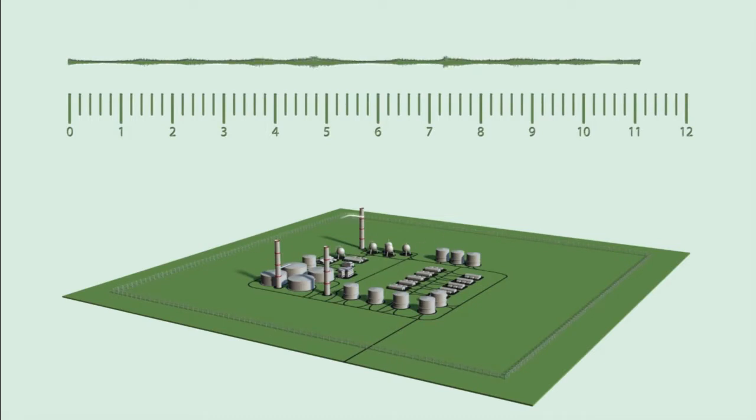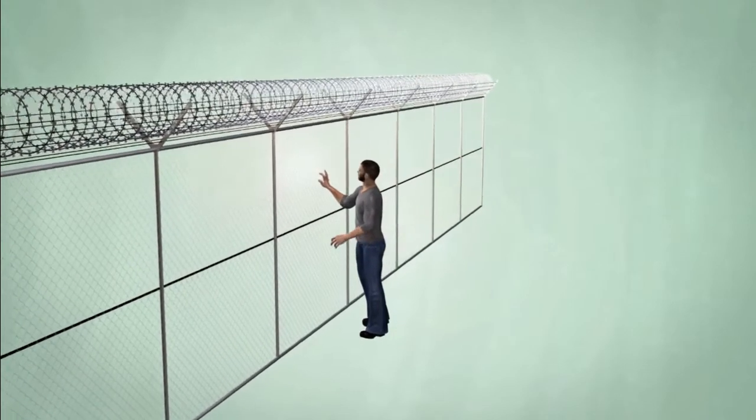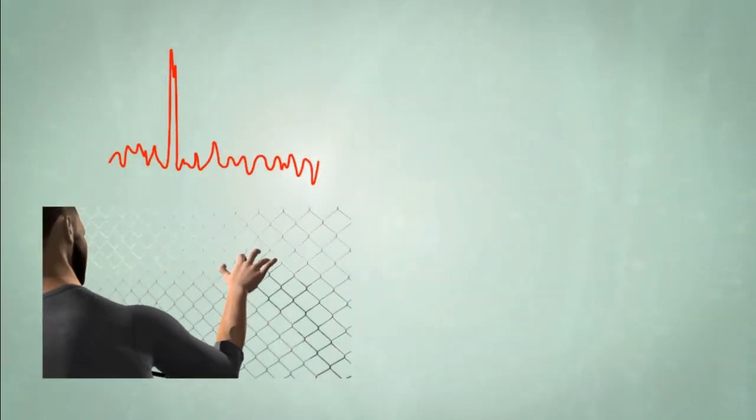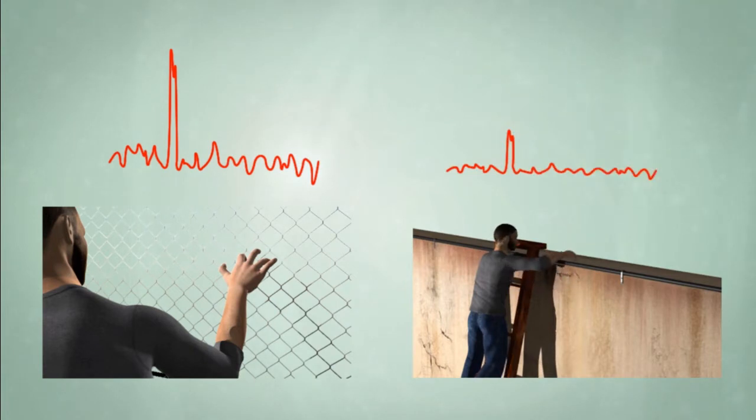When the fiber is static, the display shows no spikes. An intrusion would shake a section of the fiber and a spike would show due to the change in the nature of the back-scattered energy.